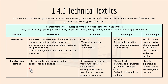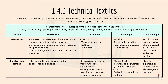Construction textiles are developed to improve construction appearance and longevity. Examples include waterproof membranes and concrete reinforcement in structures, as well as nets and canopies during construction. An advantage is that they are strong, light and resistant to degradation by chemicals, sunlight and acid, and are stable in different heat conditions. A disadvantage is that they may be expensive or hard to source and may degrade over time.